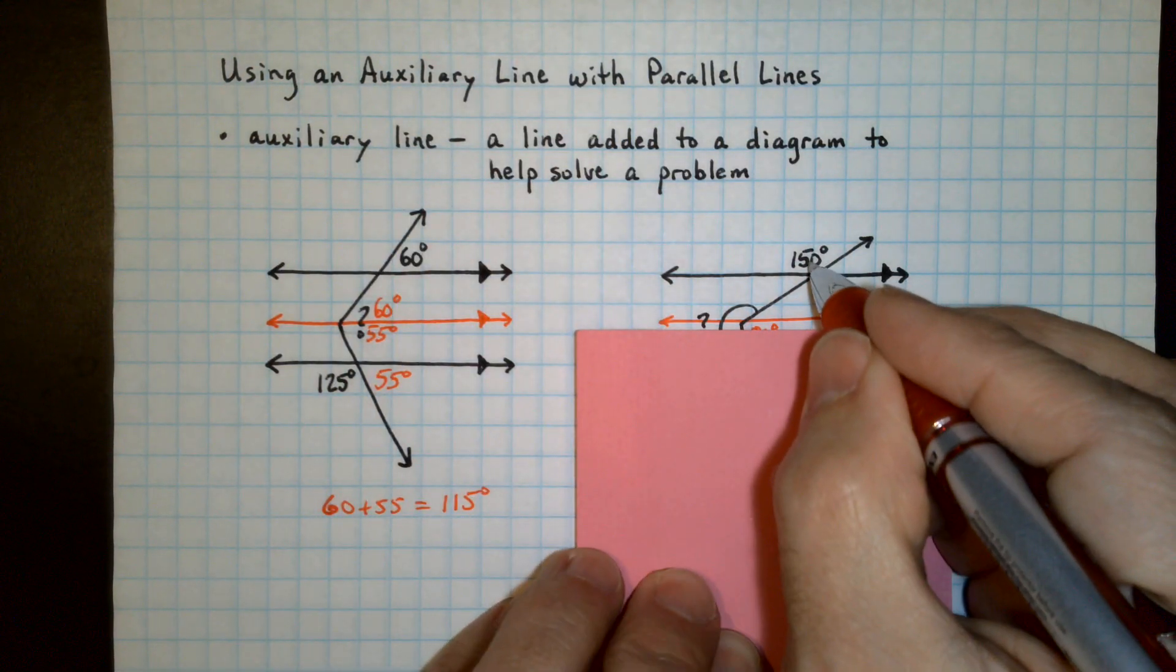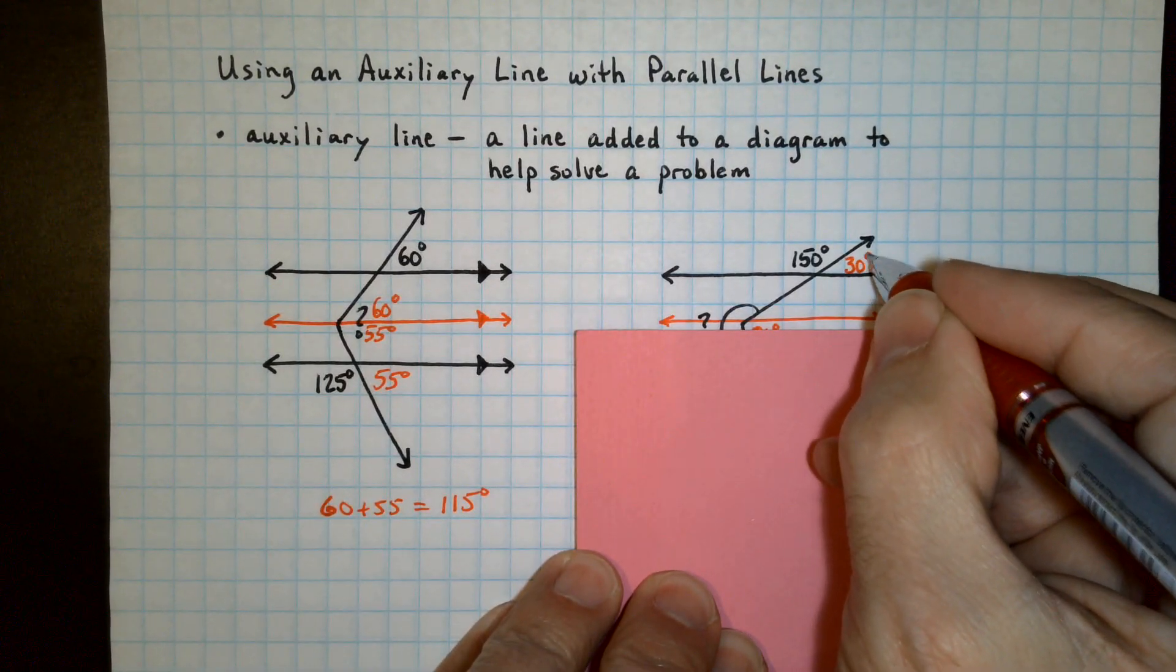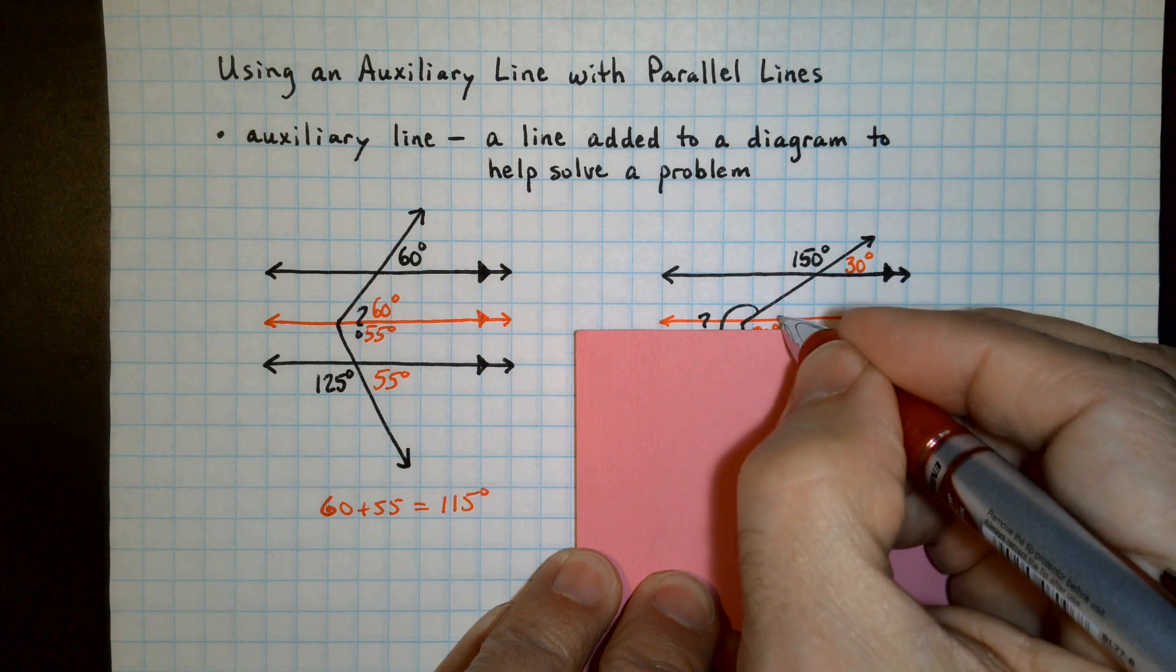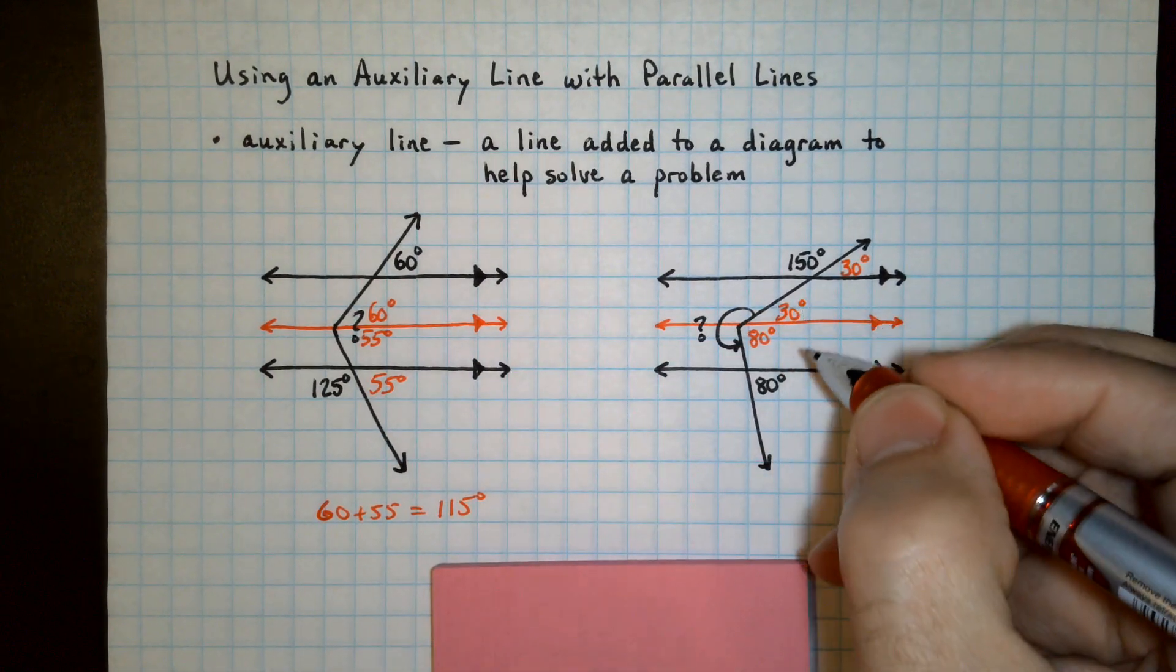the bottom part. This is 150. That means linear pair with this one is 30. And this angle corresponds to this part of the angle. So that's 30.